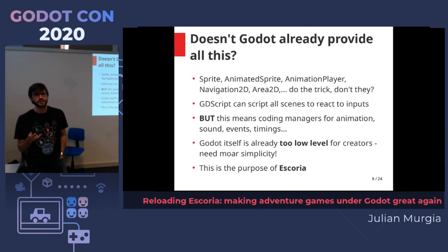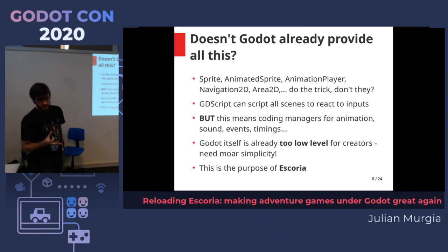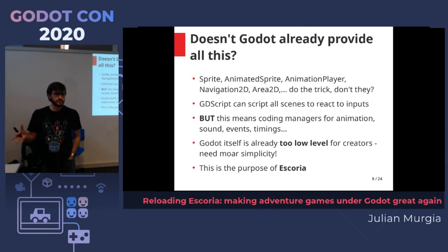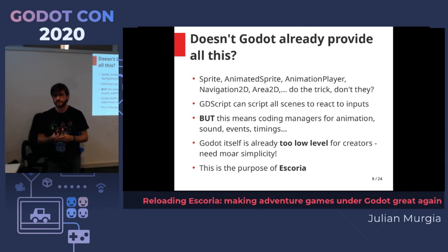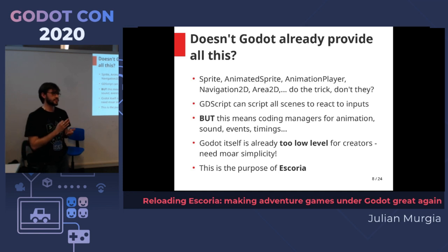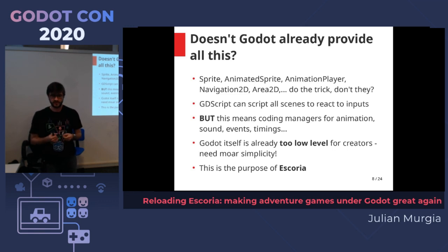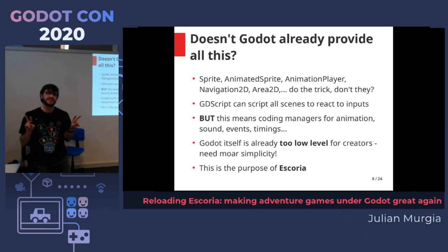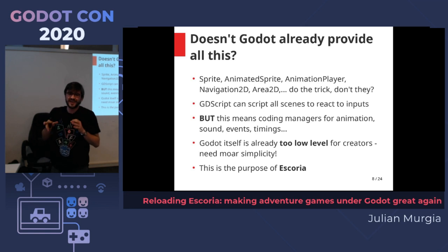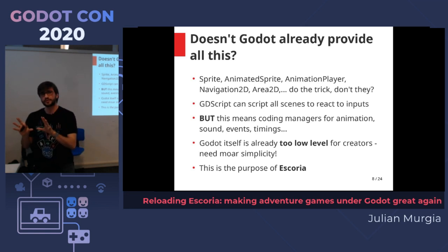Godot already provides everything we need — animated sprites, animation player — that's already some high-level stuff. You have GDScript to script your nodes together and code your game logic. But this means coding managers for animation, sound inputs, events, timings, etc. This brings a lot of difficulties, especially if you're targeting mobile platforms with tactile devices. Sometimes you'll have different input management depending on the platform. So Godot itself is already too low-level for this need when talking to game creators — we need more simplicity. And here comes Escoria.